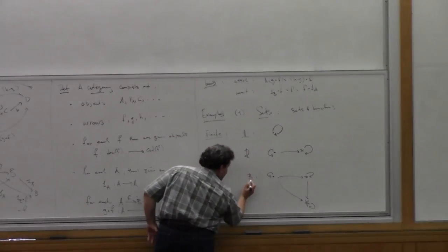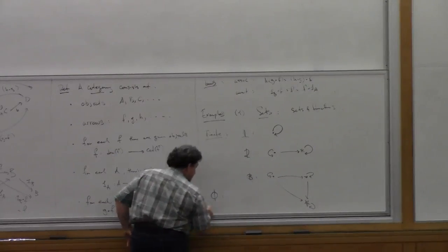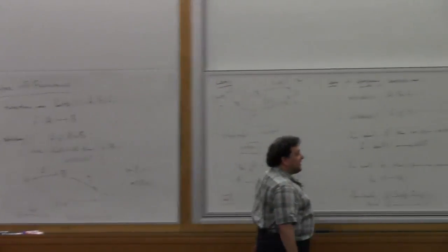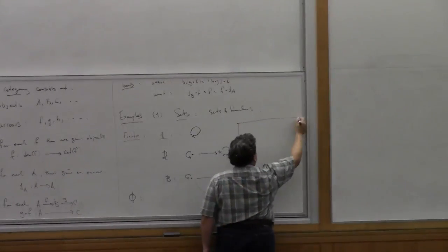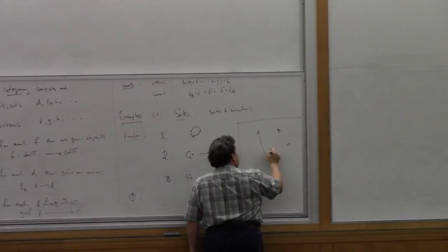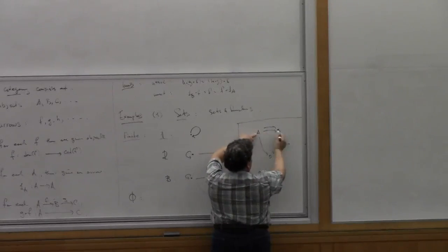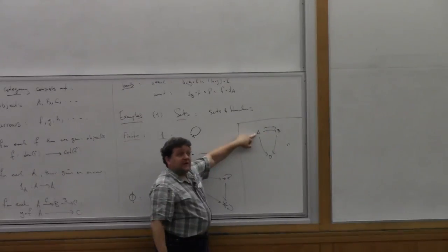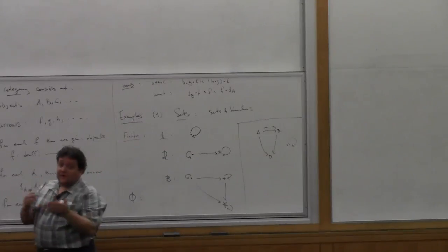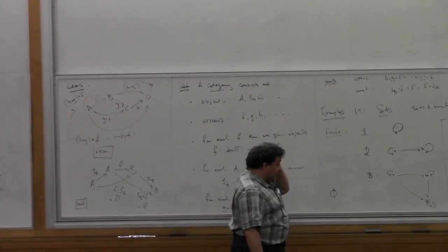You can make lots of finite categories: take some objects A, B, C, D, put in some arrows, but make sure that for any composable sequence you specify what the composite is going to be. You can make finite categories like that very easily, involving some finite family of objects and some finite collection of arrows, then define compositions and identity operations.